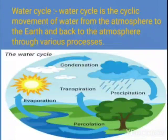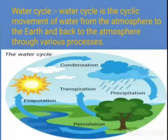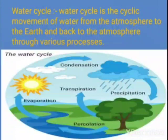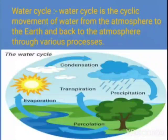This is called the water cycle. The water cycle involves various processes like evaporation, condensation, and precipitation. The water cycle is the cyclic movement of water in the form of vapor from the earth to the atmosphere and back to earth through various processes.